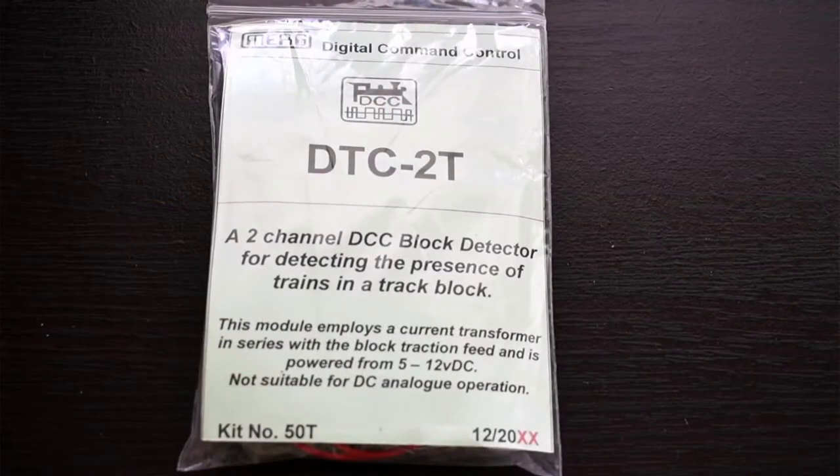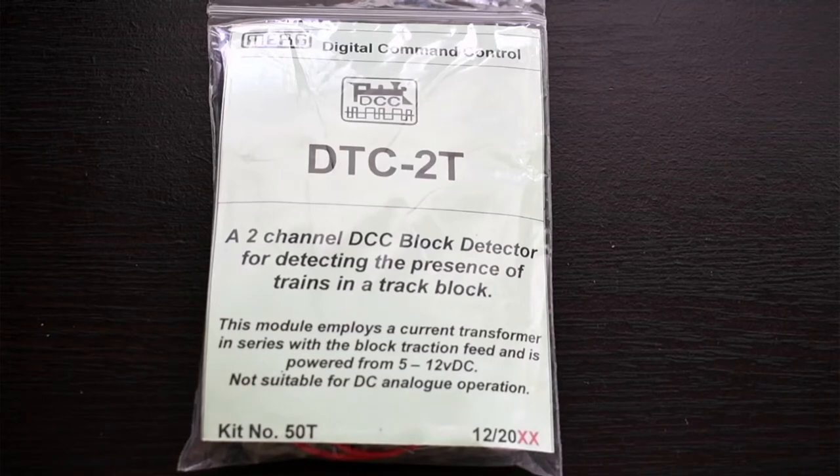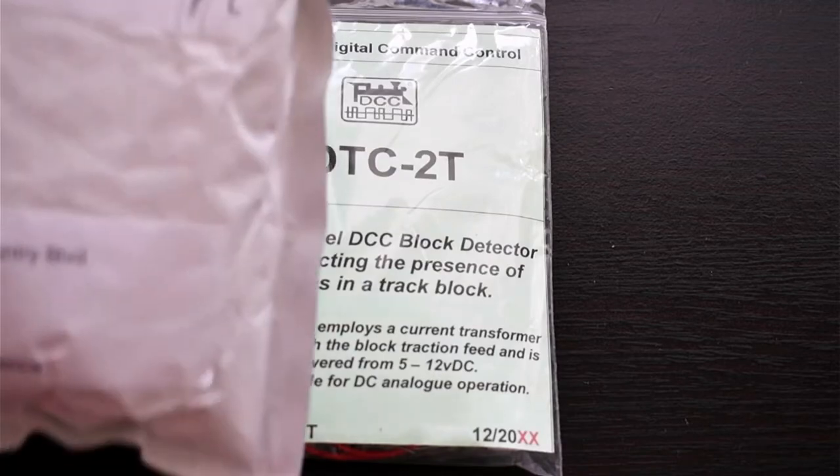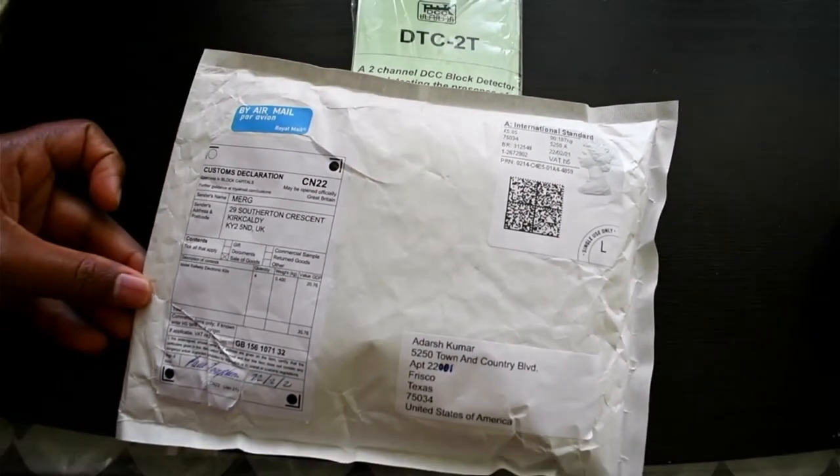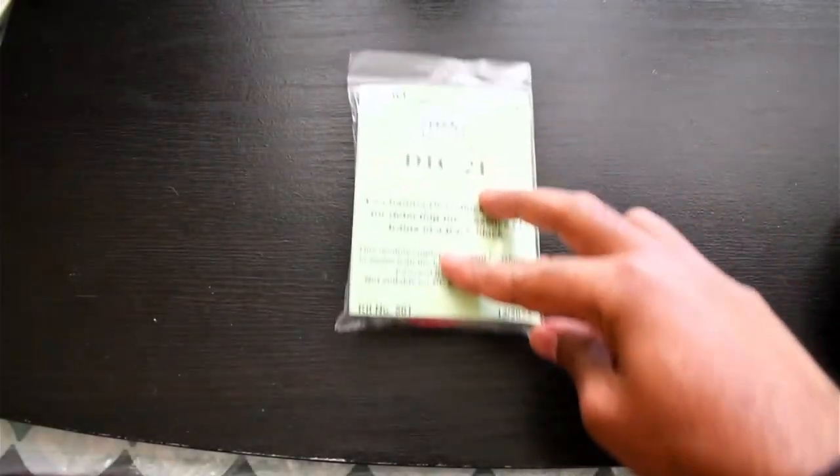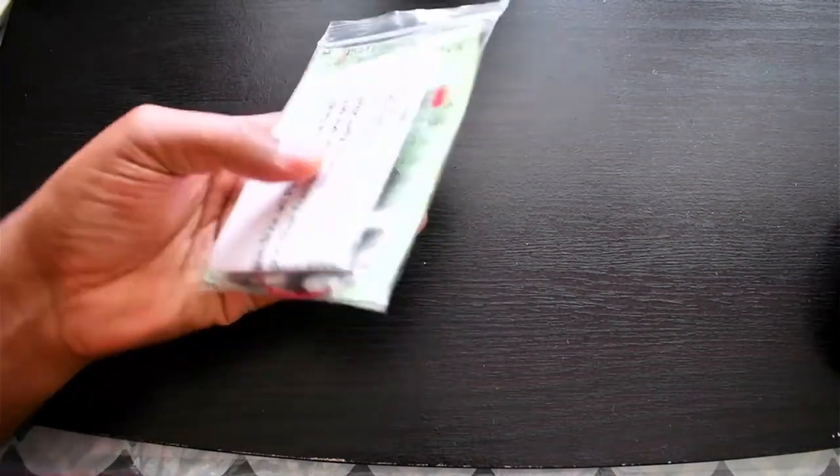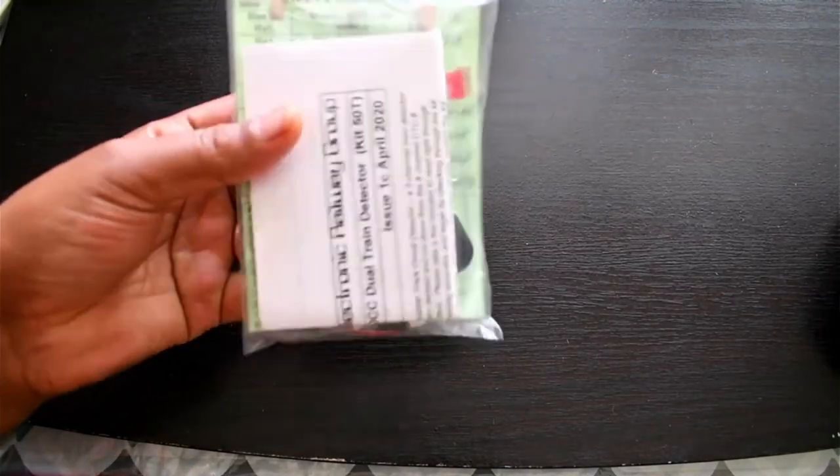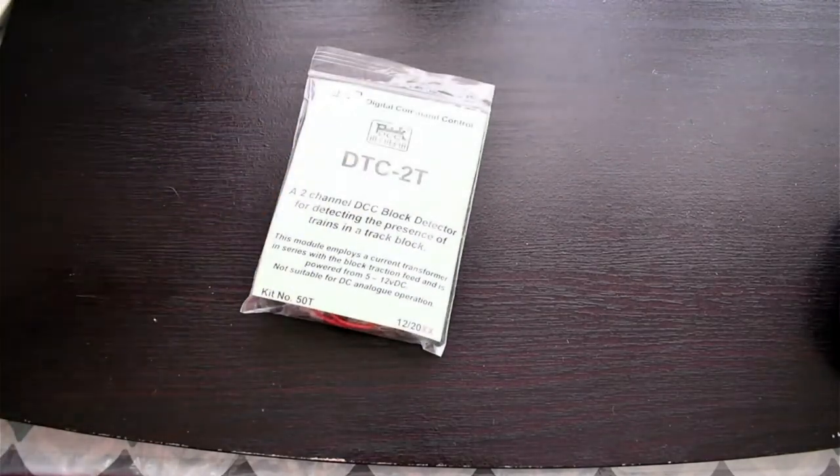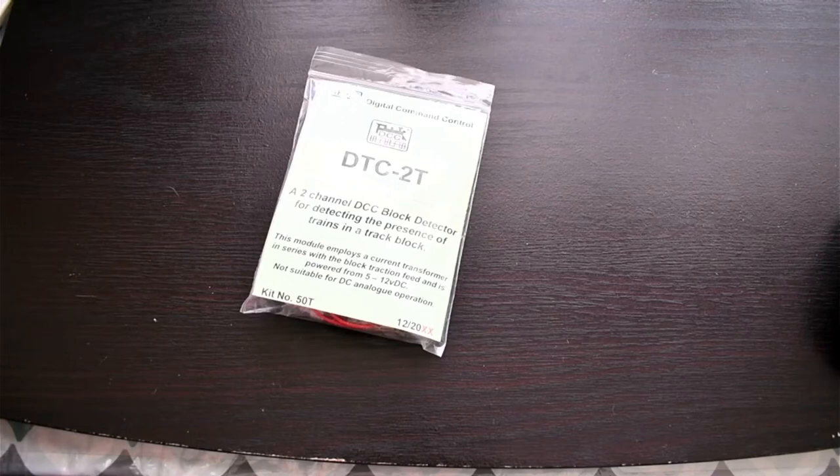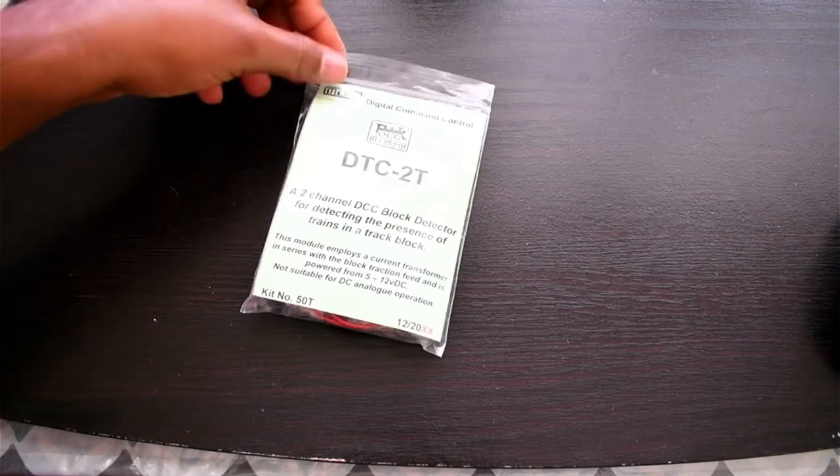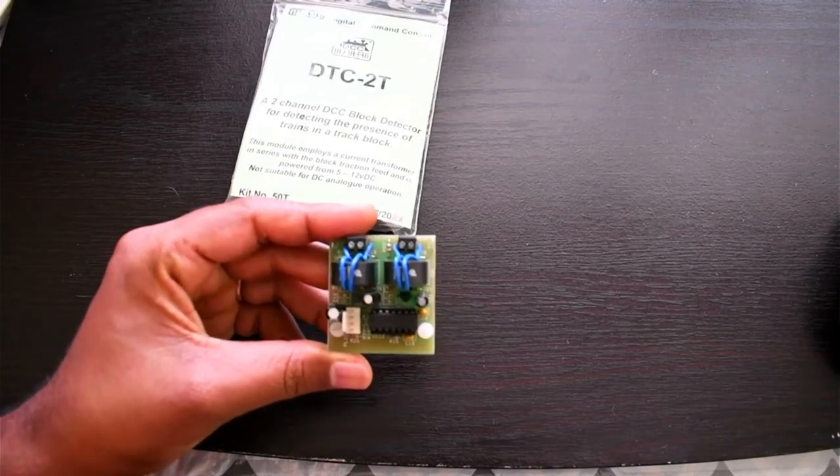I've already bought one of the kits from MERG, which is DTC2D. They will send you a kit in nice packing. Once you open it, you'll see it contains resistors, diodes, current transformers, and some wires. Once they send you everything, you have to solder it all on the board. Once you solder it, it looks like something like this.